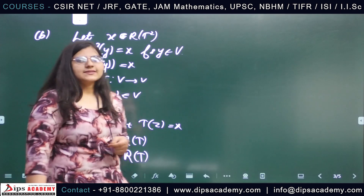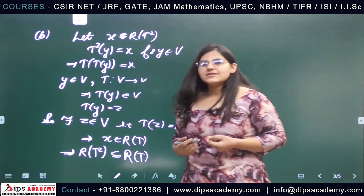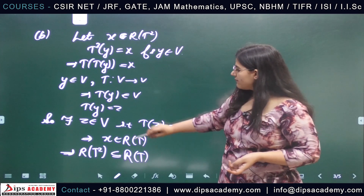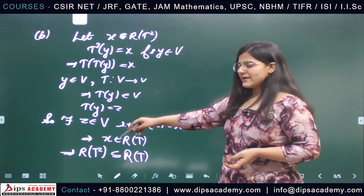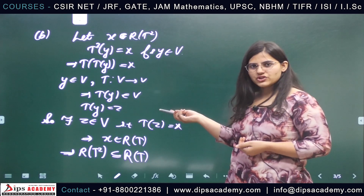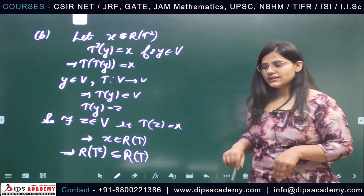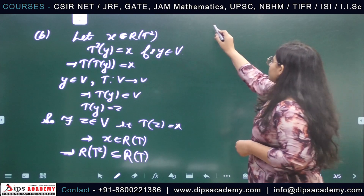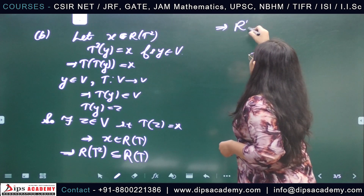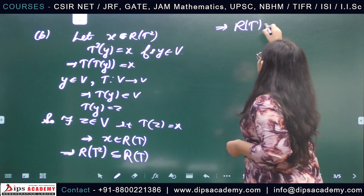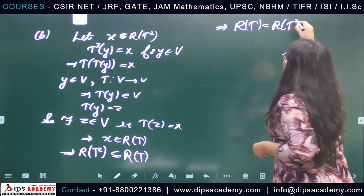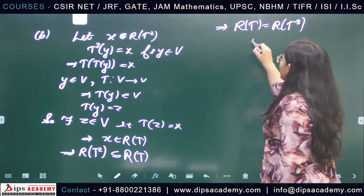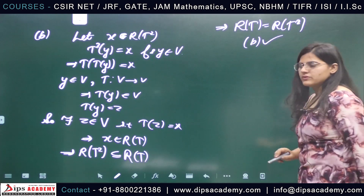We have shown range space of T squared is contained in range space of T. It is also given that rank of T equals rank of T squared, so both spaces have the same dimension. Since one is contained in the other and their dimensions are equal, they must be equal. Therefore R(T) equals R(T squared), and option B is also true.